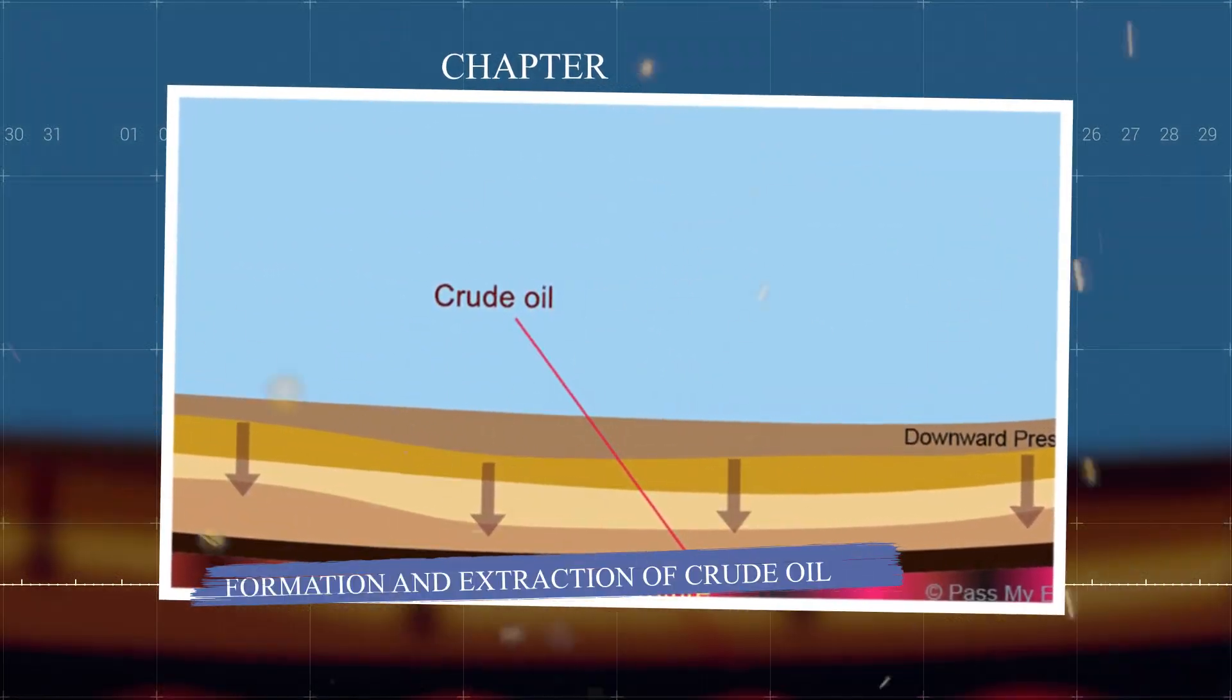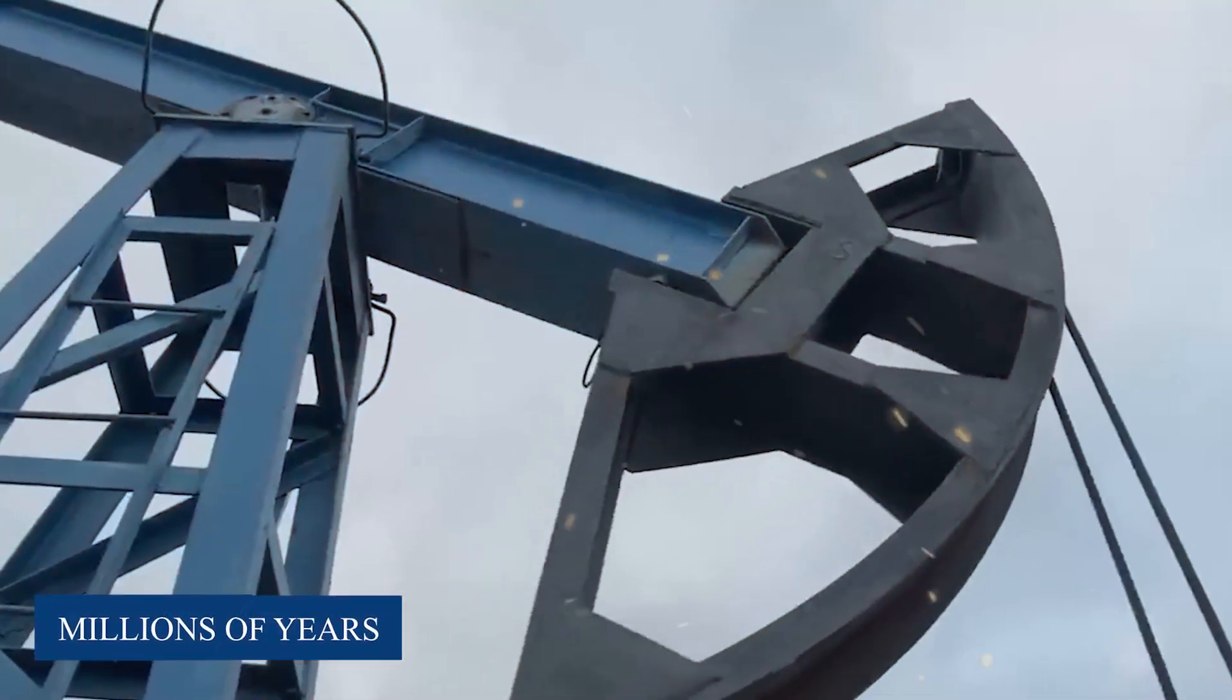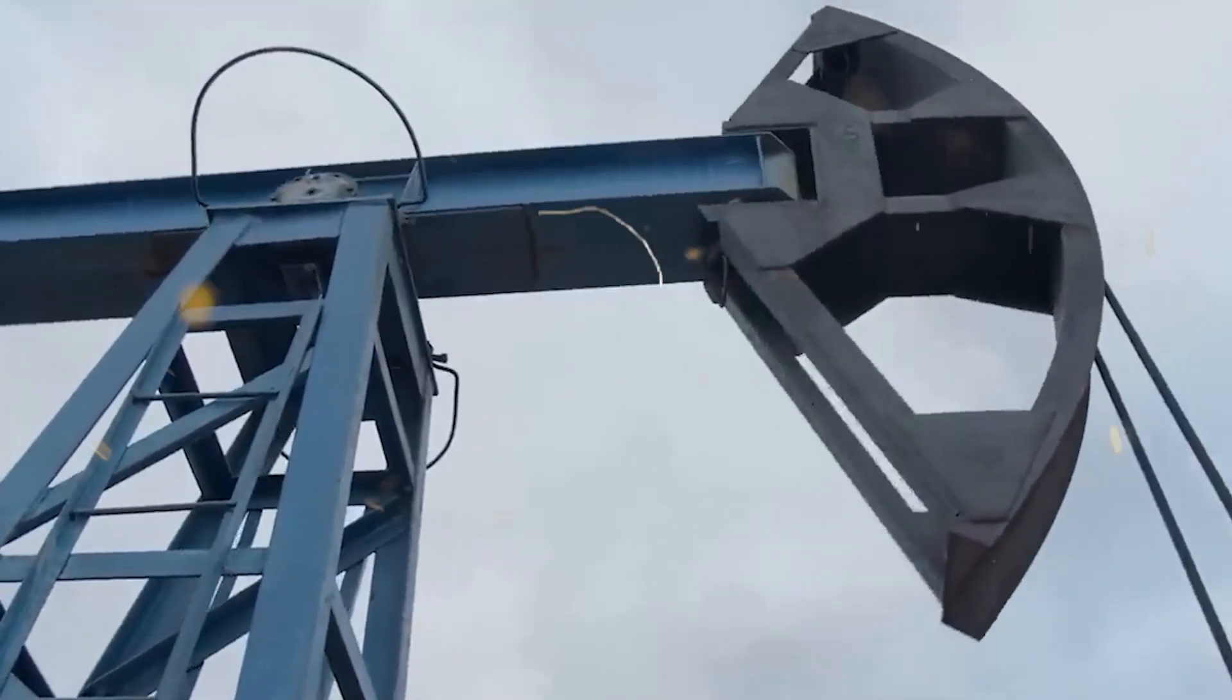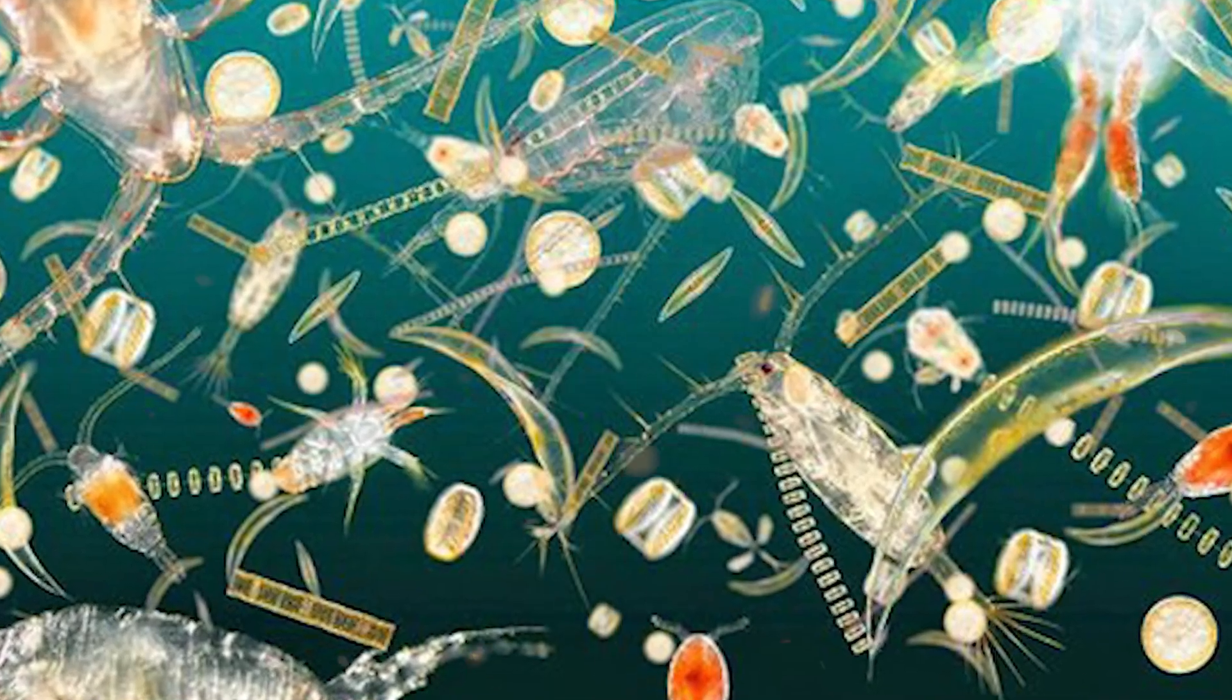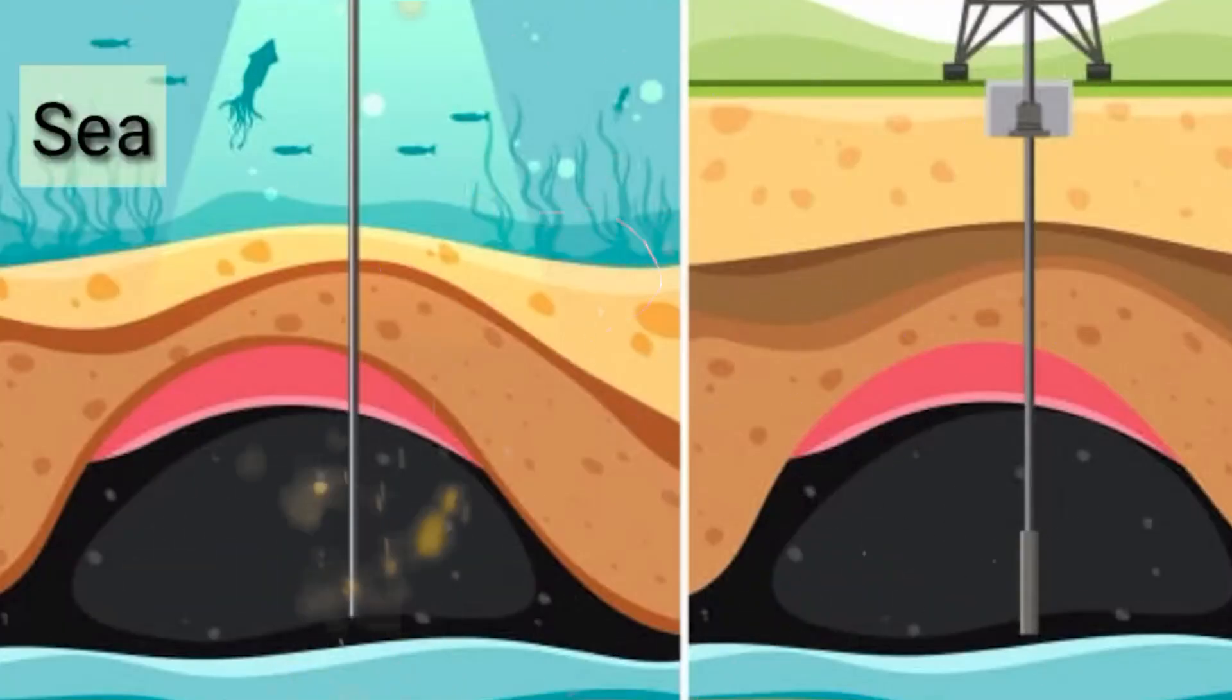Crude oil, also known as petroleum, is formed over millions of years through a process called sedimentation. It starts with tiny plants and animals in ancient oceans, dying and sinking to the bottom.